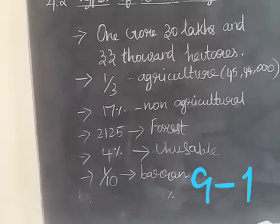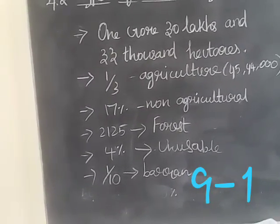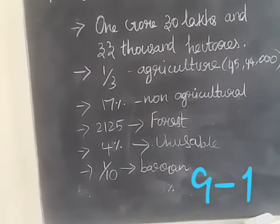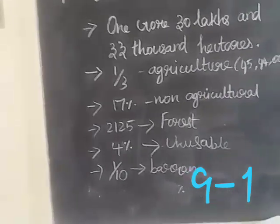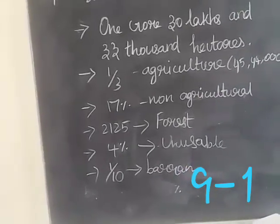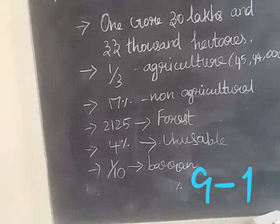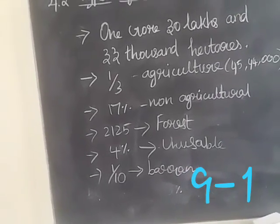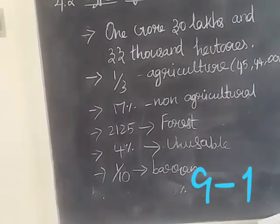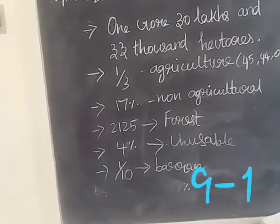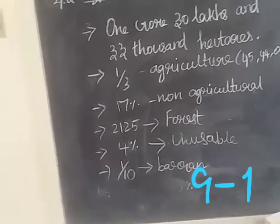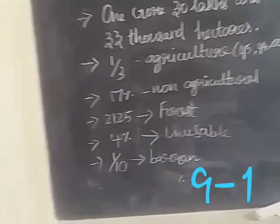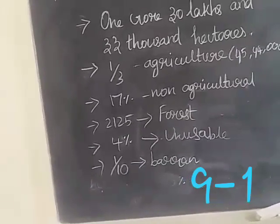Grazing land means 'maigai nilam.' Cash crops occupy slightly more than five percentage of the total land area.